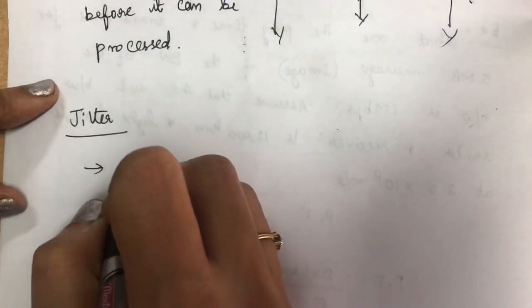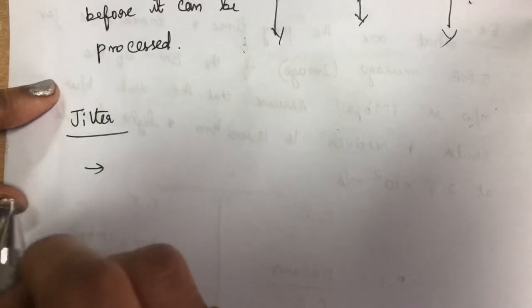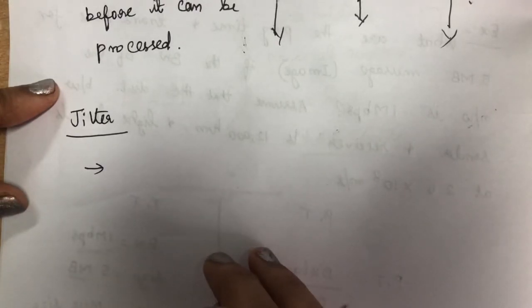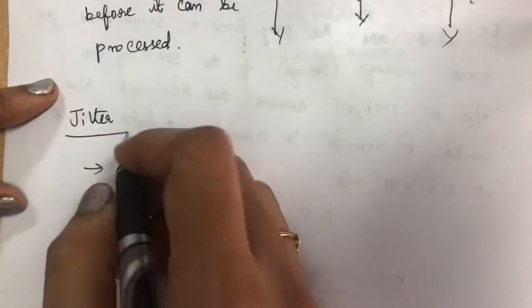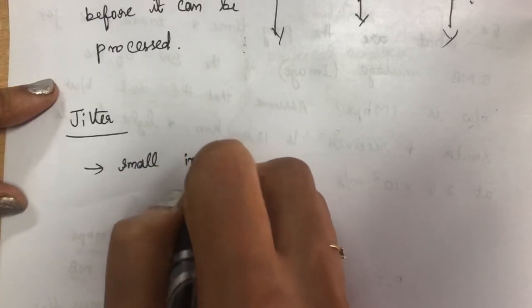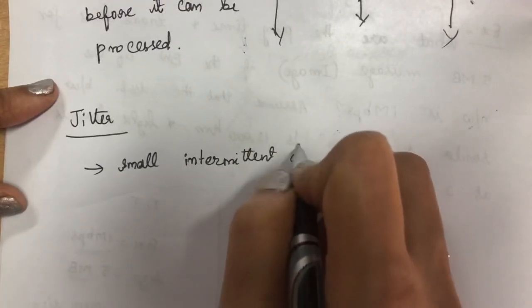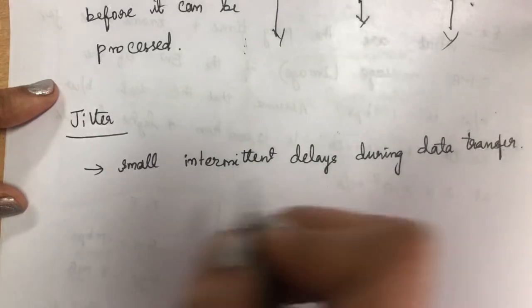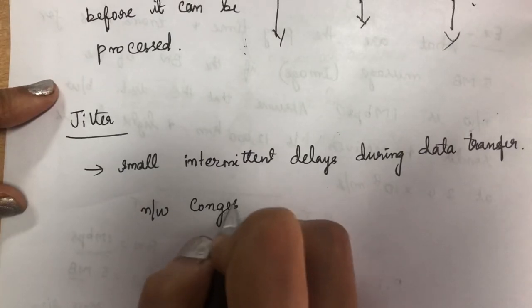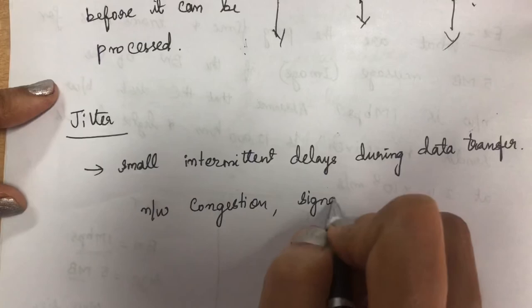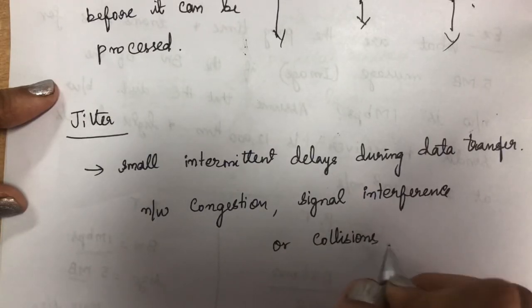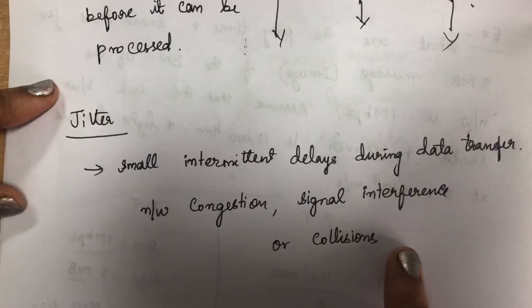Now we will see jitter. Jitter refers to small intermittent delays during data transfer. It can be caused by network congestion, collision, or signal interference. Because of these interferences, small delays occur in the network, and those delays are called jitter.